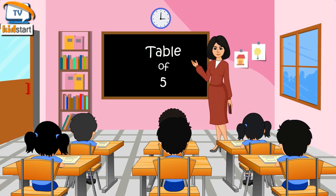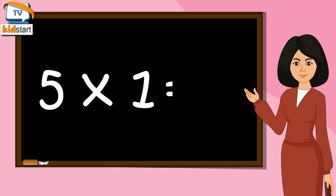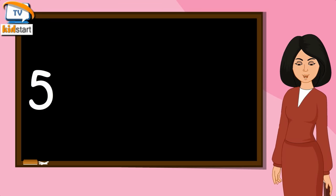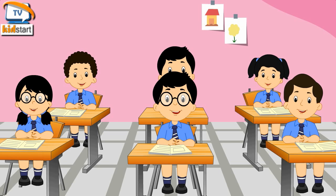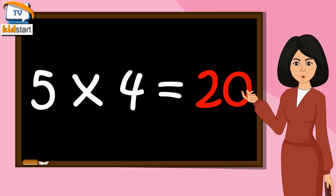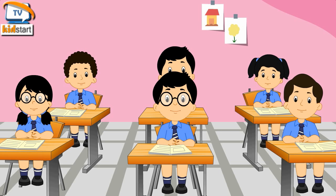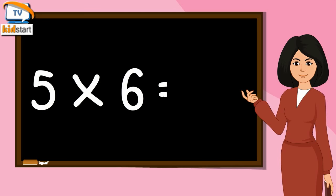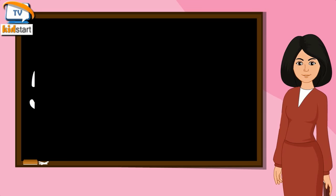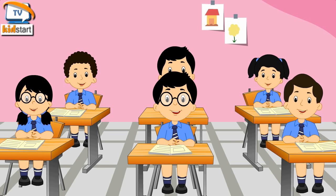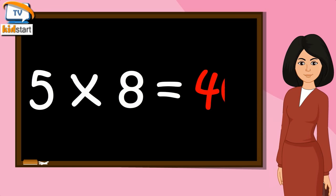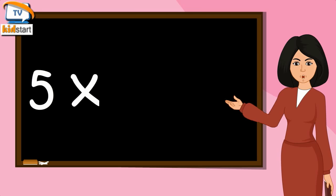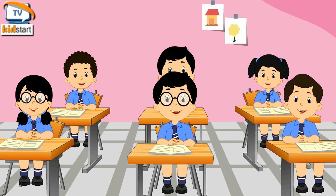Table of Five. Five Sevens are Thirty-Five. Five Eights are Forty. Five Nines are Forty-Five. Five Tens are Fifty.